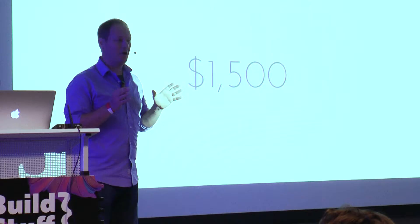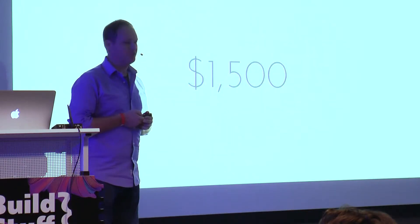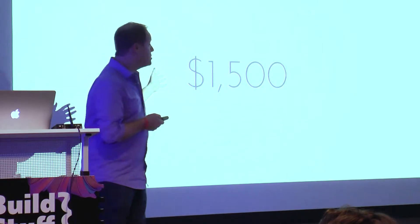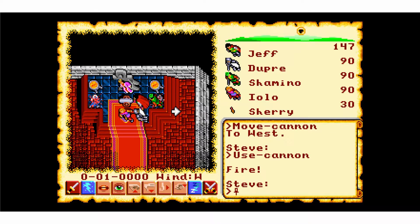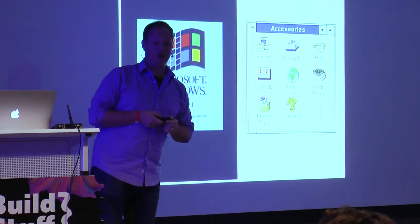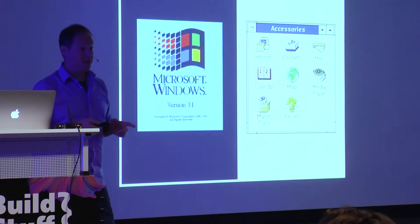It was an amazing computer — for the low, low price of about $1,500 US. You could do amazing things like play Ultima games and other old games, or even run Windows from your DOS prompt. It did amazing things at the time.